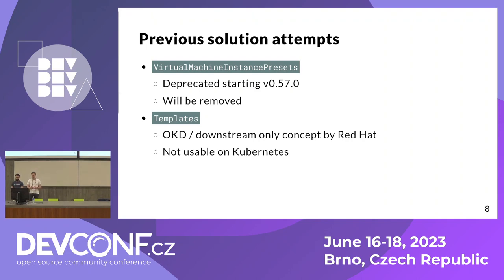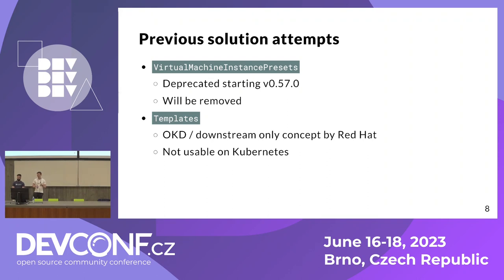The second solution attempt we had were the templates. The issue with them is that they are a downstream concept by Red Hat, so you can only use them on OKD or OpenShift — they're not usable on Kubernetes. They have another issue: when you create a virtual machine from a template, you create a copy of the whole definition inside the template. If you create another VM, you create another copy, and so on. If you wanted to improve your template and change some setting, the only way to apply the setting to all your existing virtual machines would be to drop them and recreate them completely. This is also not very maintenance friendly.